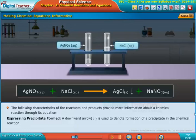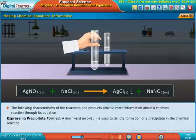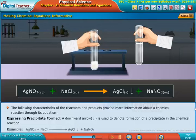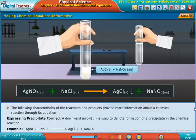Expressing precipitate formed: a downward arrow is used to denote formation of a precipitate in the chemical reaction. The example is provided on the screen. Now let us learn about interpretation of a balanced chemical equation.